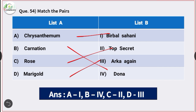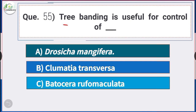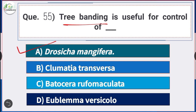Question number 55: Tree banding is useful for control of — answer option E — Drosicha mangiferae. Tree banding is useful for the control of Drosicha mangiferae.